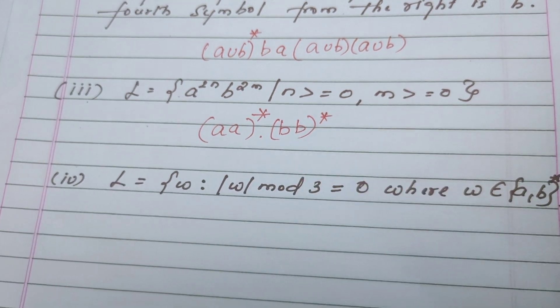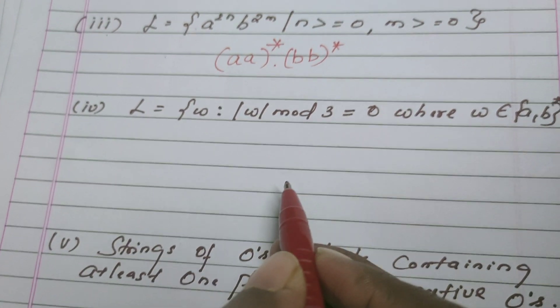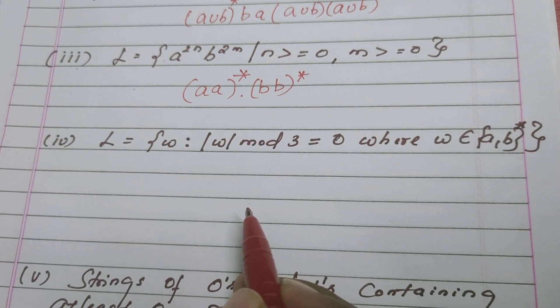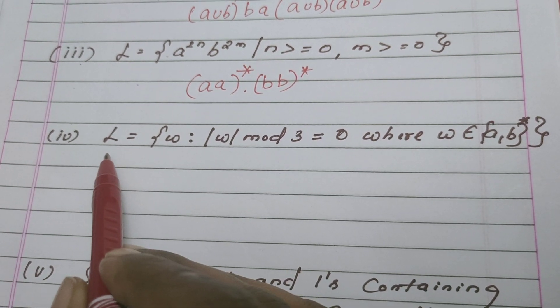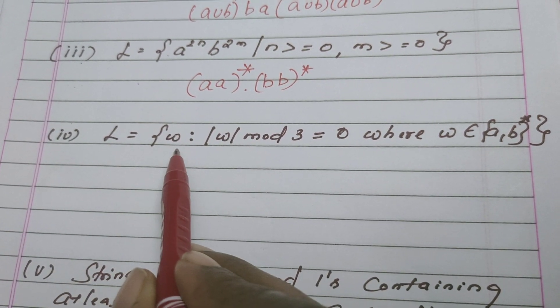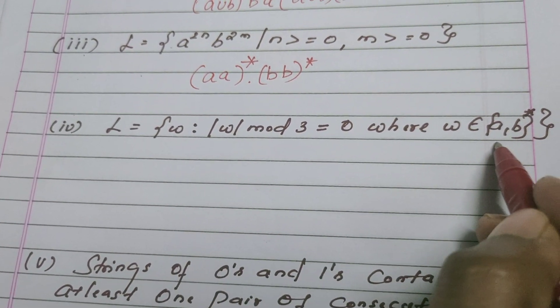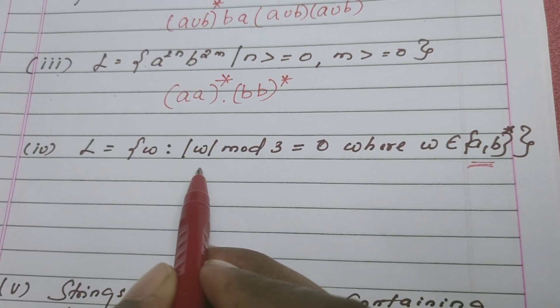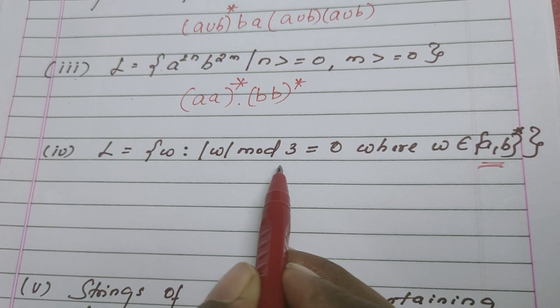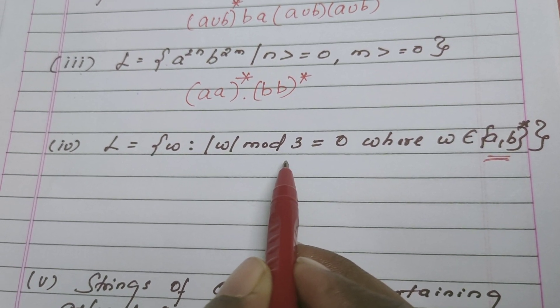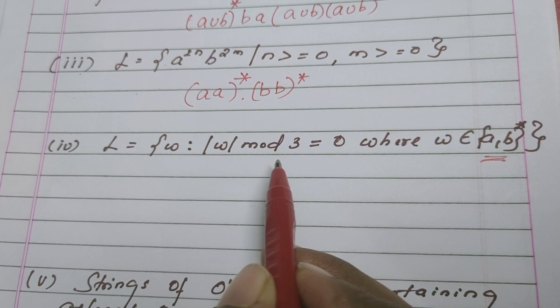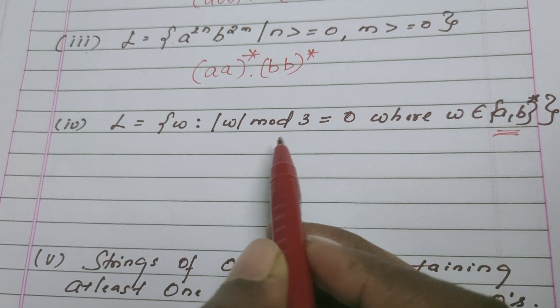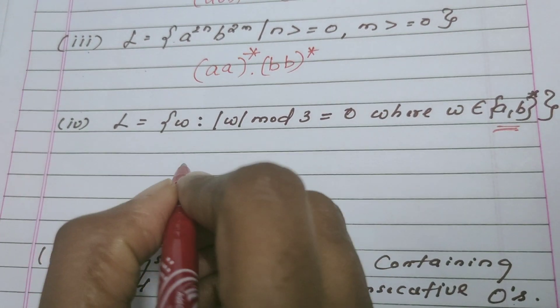Let's move on to the fourth one. In the fourth question, the given language says that it contains set of strings of A's and B's again, and length of every string is divisible by 3. Of course the length of the string must be 3 and multiples of 3. So this is also very quite simple.